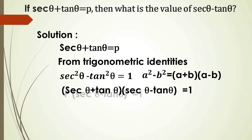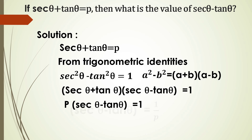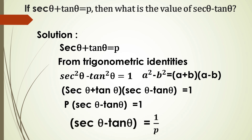In place of sec θ + tan θ, we keep p, so we get p × (sec θ - tan θ) = 1. Now transposing p, we get sec θ - tan θ = 1/p.